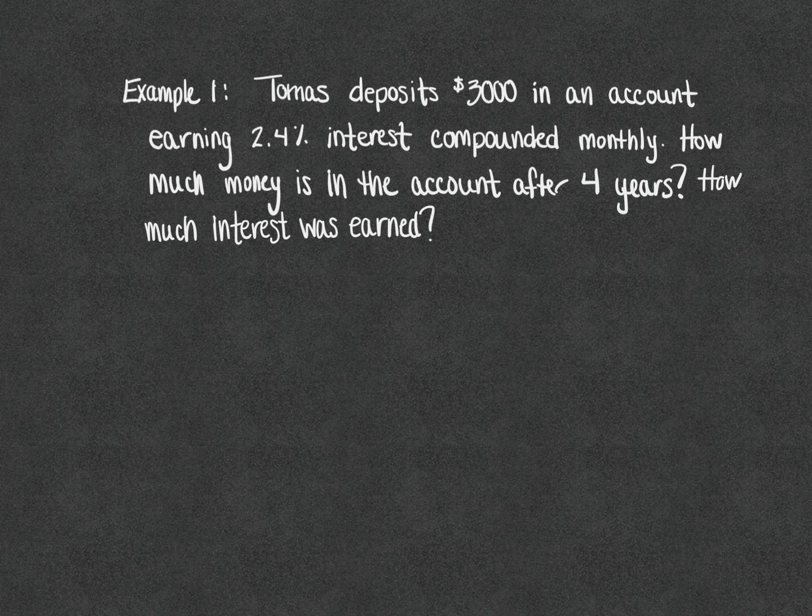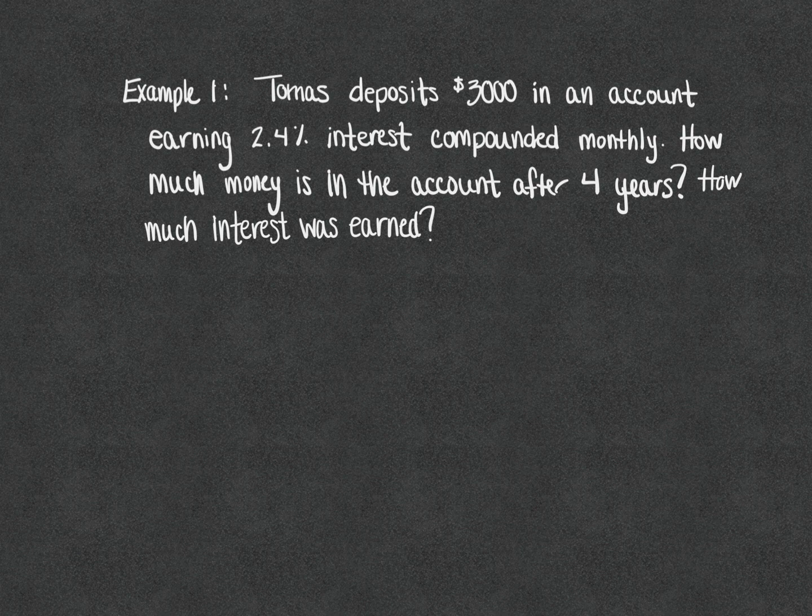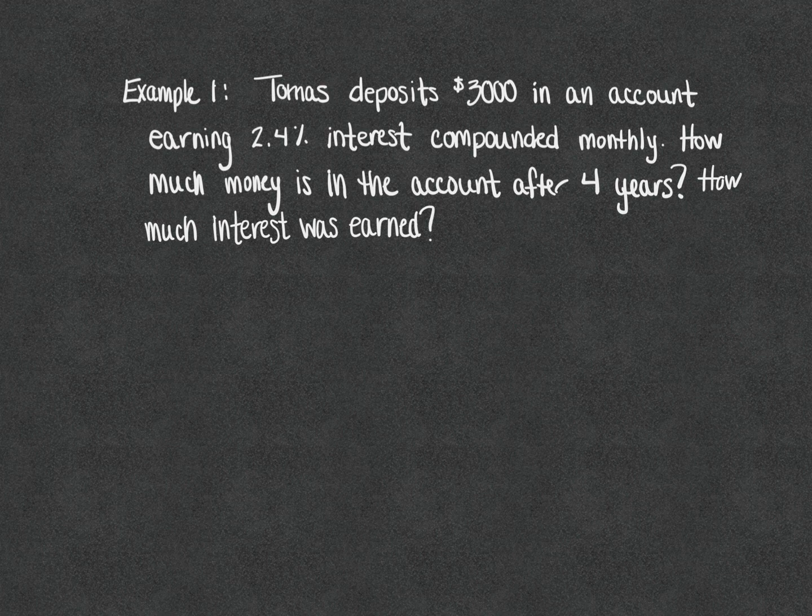Moving on to our first example: Tomas deposits $3,000 in an account earning 2.4% interest compounded monthly. How much money is in the account after four years? And second of all, how much interest was earned?